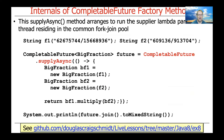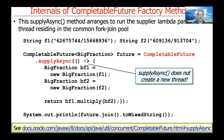Let's zoom in on the supplyAsync method, which is one of those factory methods that arranges to run the supplier lambda within a thread that resides in the common fork-join pool. This is the same example we looked at before from the ex8 folder. We have a call to supplyAsync, and notice that supplyAsync does not create a new thread.